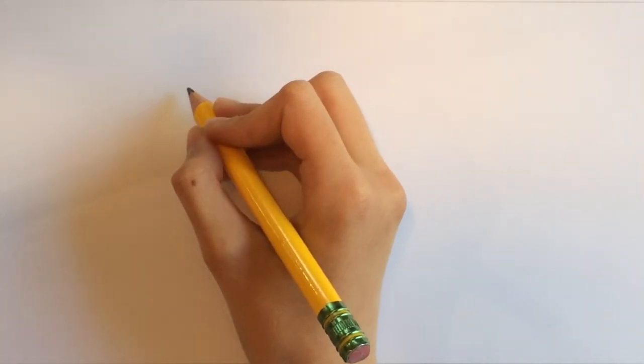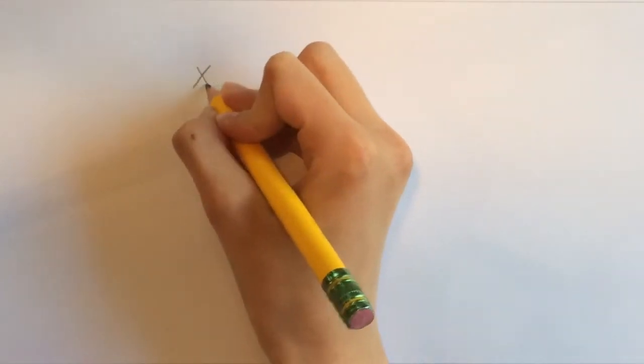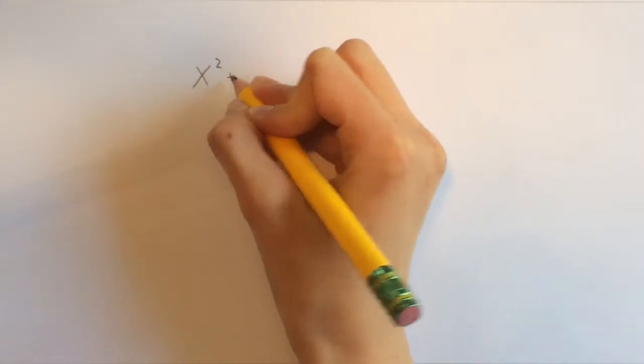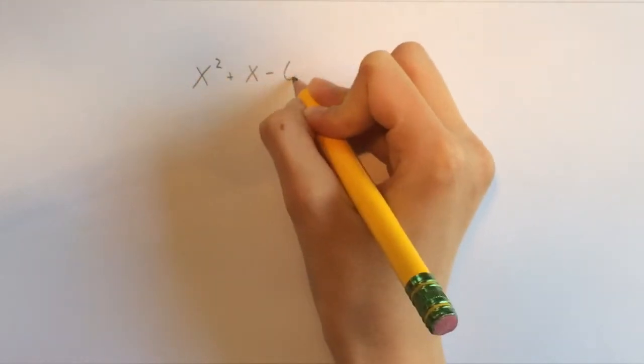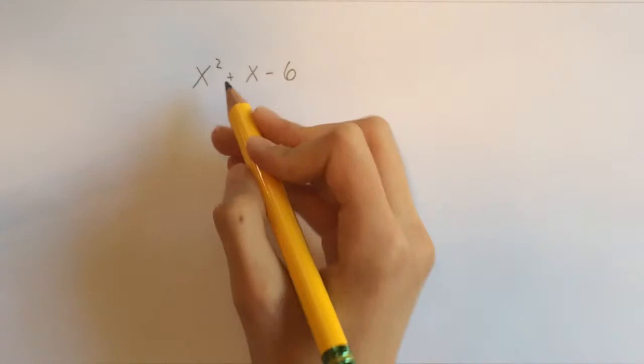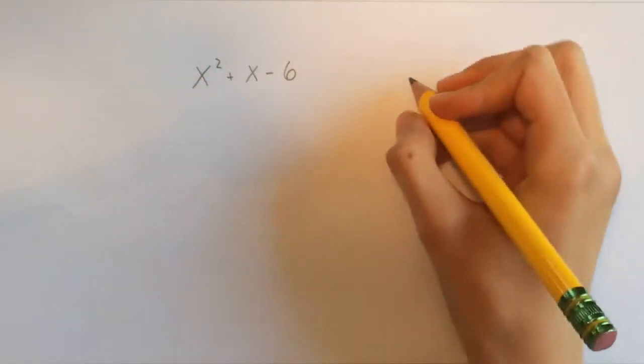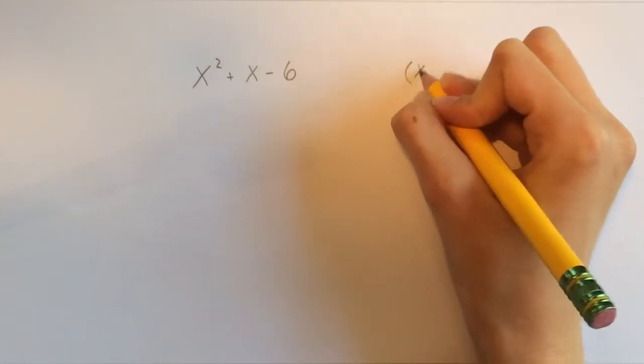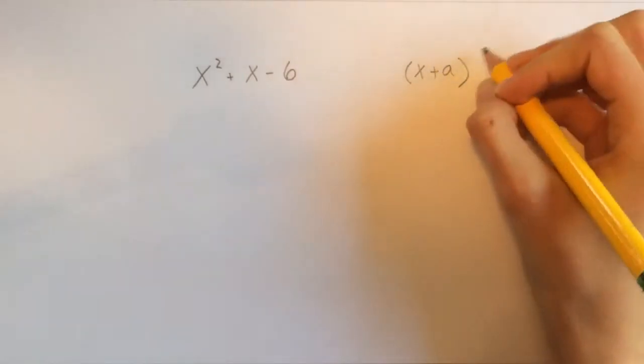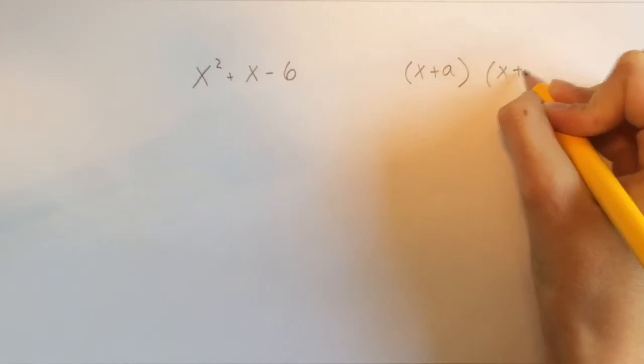So today the polynomial we're going to be working with is x squared plus x minus 6. Okay, so we want to change x squared plus x minus 6 into something in the form of x plus a times x plus b.